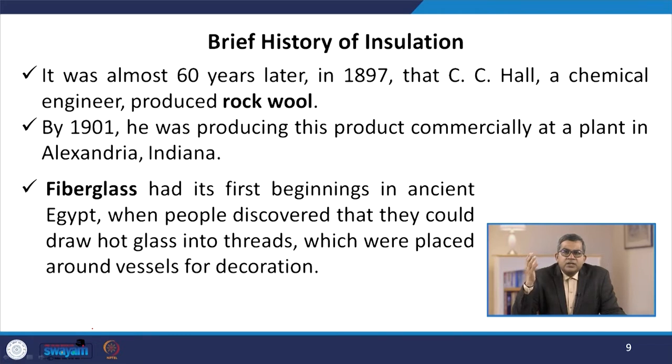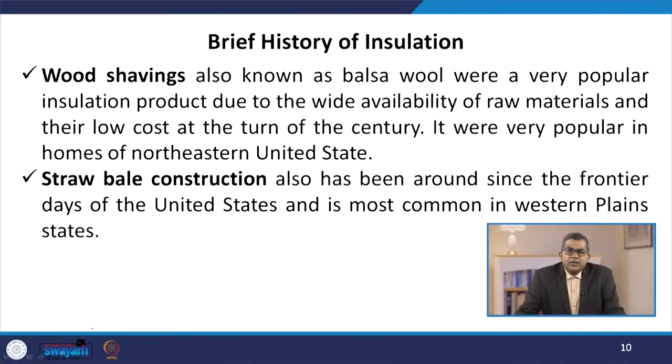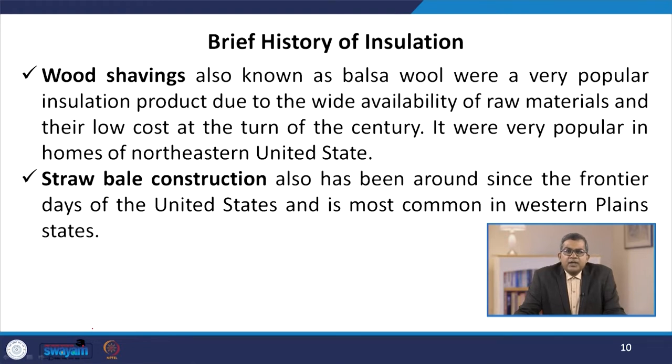Fiberglass had its first beginning in ancient Egypt when people discovered they could draw hot glass into threads placed around vessels for decoration. Wood shavings, also known as balsa wool, were a very popular insulation product due to wide availability and low cost at the turn of the century, popular in homes of the northeastern United States. Straw-bale construction has been around since the frontier days of the United States and is most common in western plain states. Reflective insulation materials have been used for almost 200 years, with bright metallic surfaces first patented in 1804.